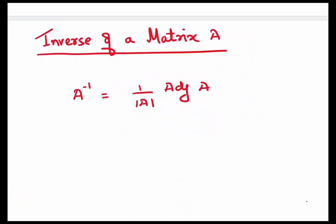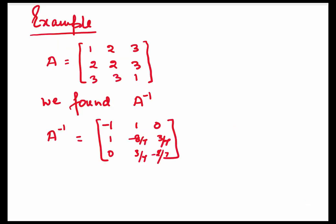Once we know what the adjoint of A is, we can always find the inverse of the matrix A. The formula is: A inverse equals 1 upon the determinant of A multiplied by the adjoint of A. This will be clear when we do an example.